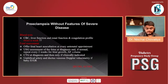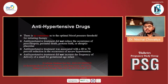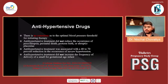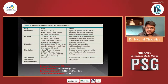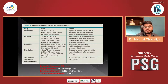Regarding anti-hypertensive drugs: there is currently no consensus on the optimal blood pressure threshold for initiating therapy. Anti-hypertensive treatment does not reduce occurrence of preeclampsia, perinatal death, preterm birth, or abruptio placentae, but is associated with a 40–70% reduction in occurrence of severe hypertension and does not increase frequency of small-for-gestational-age infants. Methyldopa: start with 250 mg twice a day, can increase up to 1000 mg TDS (3000 mg daily dose); it has the greatest available data in pregnancy.